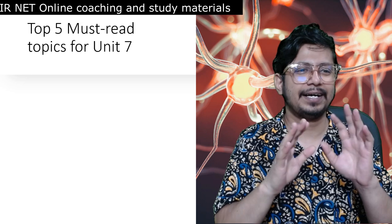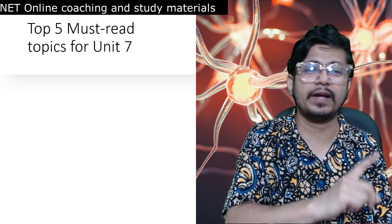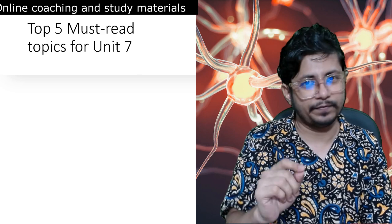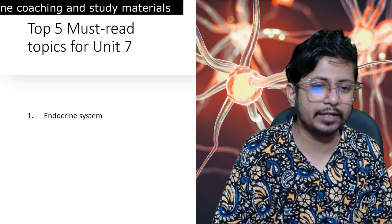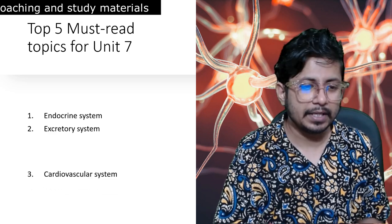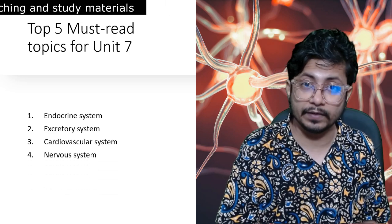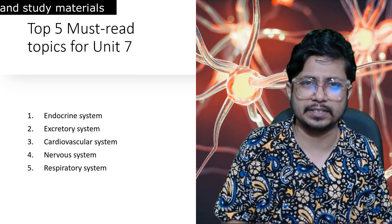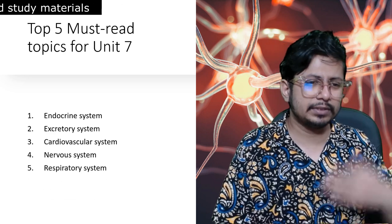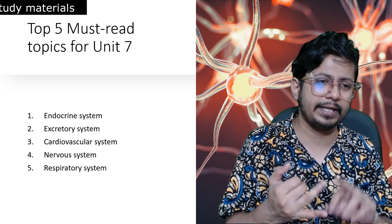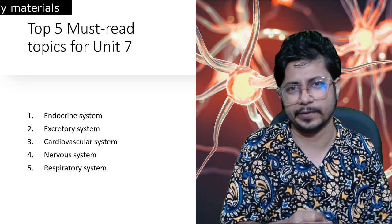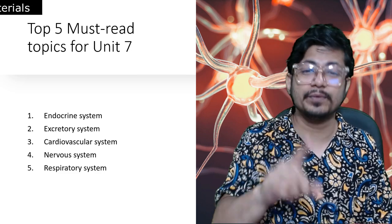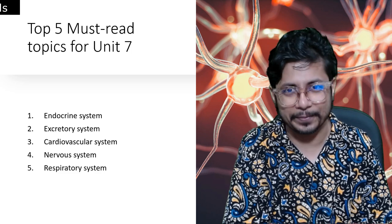Now for the top five must-read topics from Unit 7 Human Physiology: number one is the endocrine system, most important; number two is the excretory system; number three is the cardiovascular system; number four is the nervous system; and number five is the respiratory system. These five systems are the ones to focus on. You don't need to prepare anything else. And remember, this is Human Physiology, not Animal Physiology.